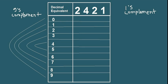Here we have the decimal equivalent of 2421. Remember one thing: every code is a complement of another. For decimal 0, the 9's complement will be 9; for 1, the 9's complement will be 8; for 2 it's 7; for 3 it's 6; for 4 it's 5. Here is the binary code and its 1's complement. For 0, the 2421 code will be 0000, and its 9's complement maps to 9.